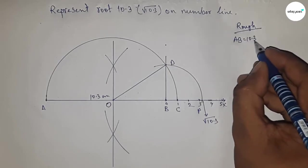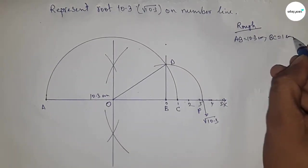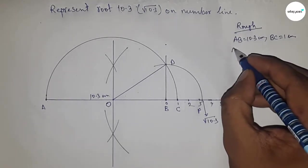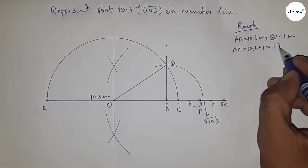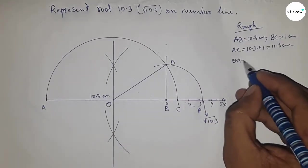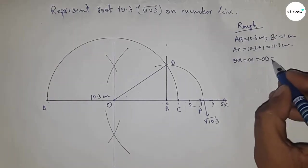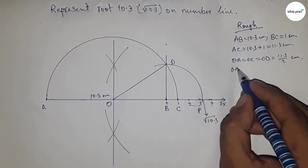BC equals 1 centimeter, so AC equals we can write 10.3 plus 1, so this is 11.3 centimeters. Now radius OA, OC, and OD equal to 11.3 by 2 centimeters. Now distance OB.